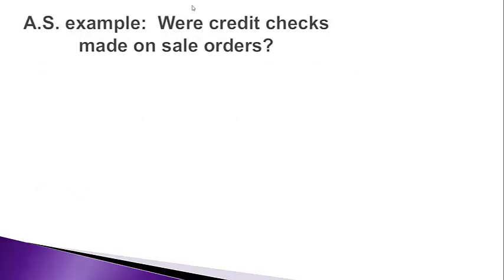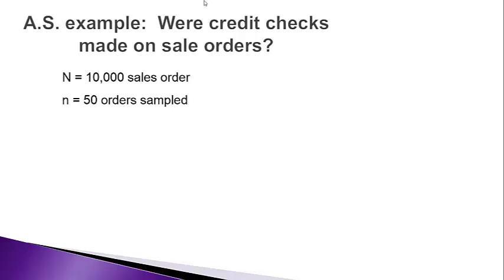The example we're going to use is whether or not credit checks were made on sales orders. Let's assume the population of sales orders is 10,000 — that's the big N, the population. We take a sample of 50 orders — little n is the sample size. We're not going to worry about calculating sample size; this is simply given as 50 orders out of 10,000.